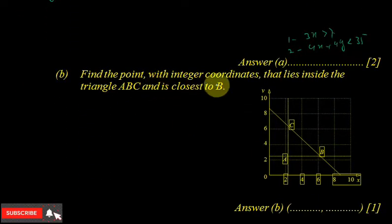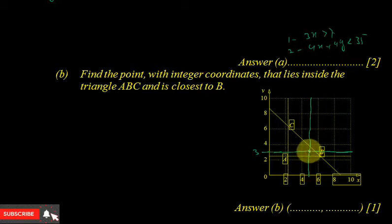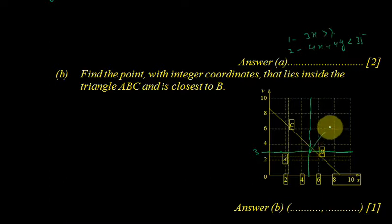Find the point with integer coordinates that lies inside the triangle ABC and closest to B. So B is there, the visible point is this, but if you see there is one more line, y equals 3, and one more line x equals 3. So this point must be close to the point B and this coordinate is 5 and it is 3. So 5 and 3 is closest to the B. You may write 5 and 3.